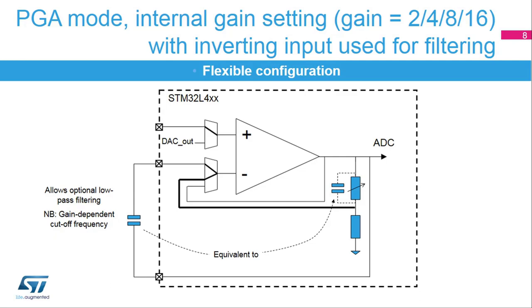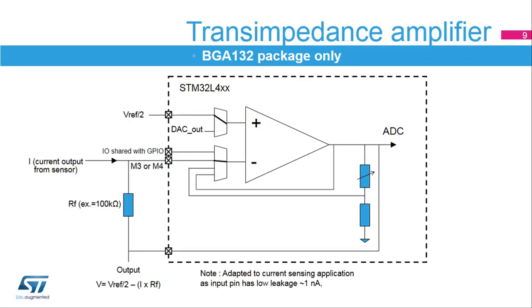It enables the connection of an external capacitor to add low-pass filter characteristics to the PGA configuration. The op-amps have a very low leakage inverting input pin to support the current sensing application.